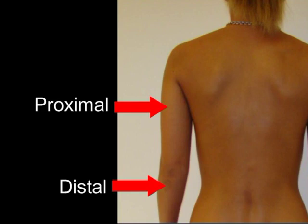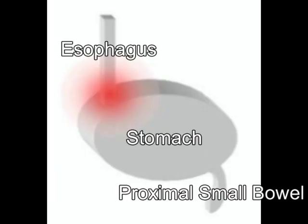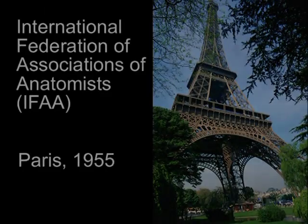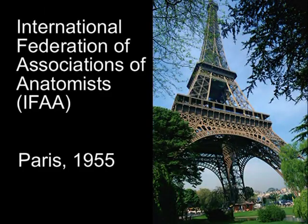Proximal means nearer to the shoulder joint or the hip joint; distal means further away from the shoulder joint or hip joint. Sometimes proximal and distal are used to identify the beginning and end of the GI tract — the portion closer to the stomach being proximal, while that further away is distal. Names are chosen to describe the structure or process as much as possible.